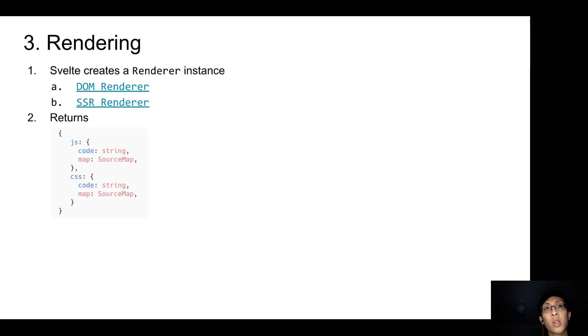Finally, both renderers return JS and CSS with the code as well as a source map. So the code can be written into the file system or can be consumed by a bundler using rollup-plugin-svelte for Rollup or svelte-loader for webpack.